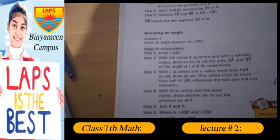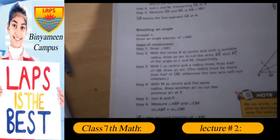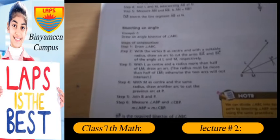Step of construction. Step 1: Draw angle ABC. Step 2: With the vertex B as center and with a suitable radius, draw an arc to cut the arms BA and BC of the angle at L and M respectively.